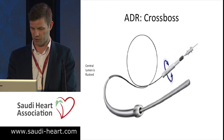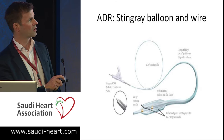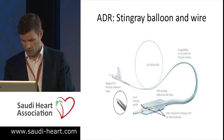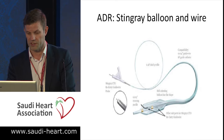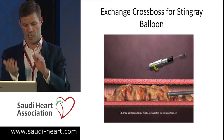This is the Stingray balloon and wire. At the bottom, you can see there are two ports — one is on one side of the balloon and one is on the other side. This is the Stingray wire, which has a barb. The advantage is that the balloon wraps around the artery when inflated, allowing us to orientate which side the vessel is on and to direct the wire in one way or the other, depending on which side the distal entry point is.